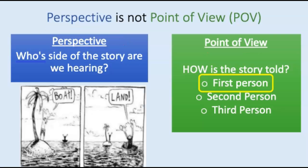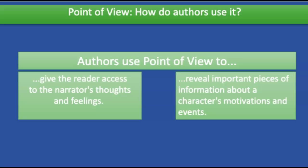You've seen this graphic before — we're showing it again because it can help you remember what perspective is. There are two perspectives or two sides of this scene in the picture: the guy excited to see land, and a guy excited to see the boat. When they write, authors use point of view strategically, meaning they do it purposefully. They use it to give the reader access to the narrator's thoughts and feelings, and they can use it to reveal important pieces of information about a character's motivations and events for their actions.